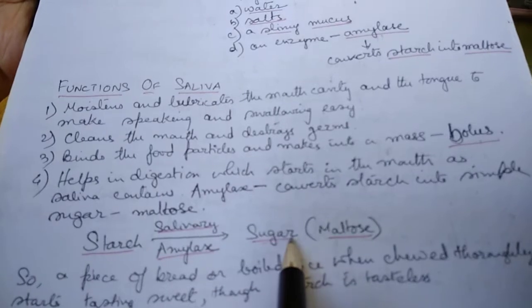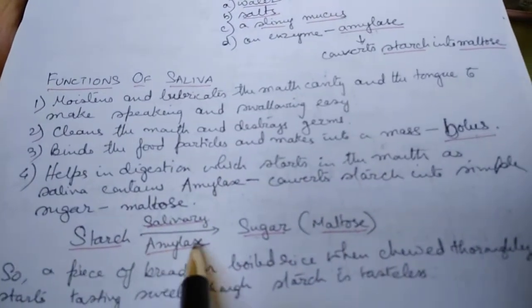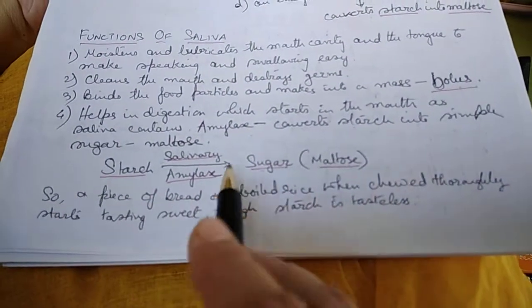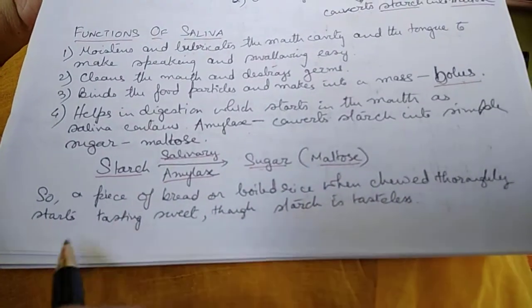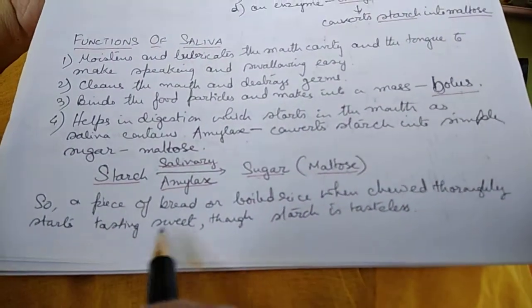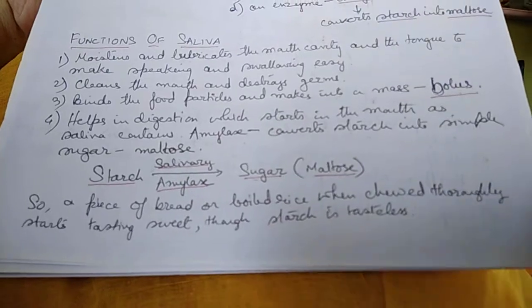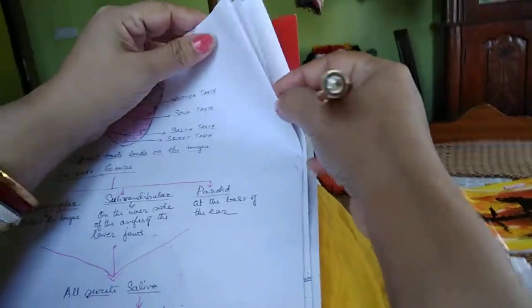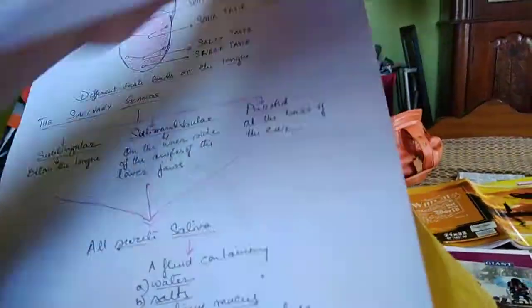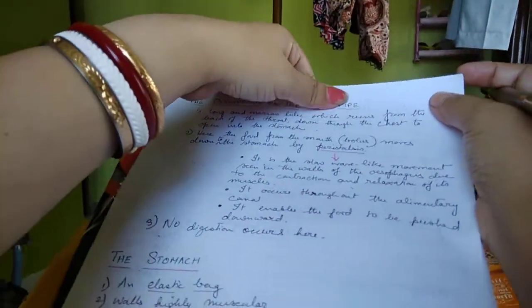Saliva helps in digestion, which starts in the mouth, as it contains amylase that converts starch into the simpler sugar maltose. This is why a piece of bread or boiled rice, when chewed thoroughly, starts tasting sweet, even though starch itself is tasteless.